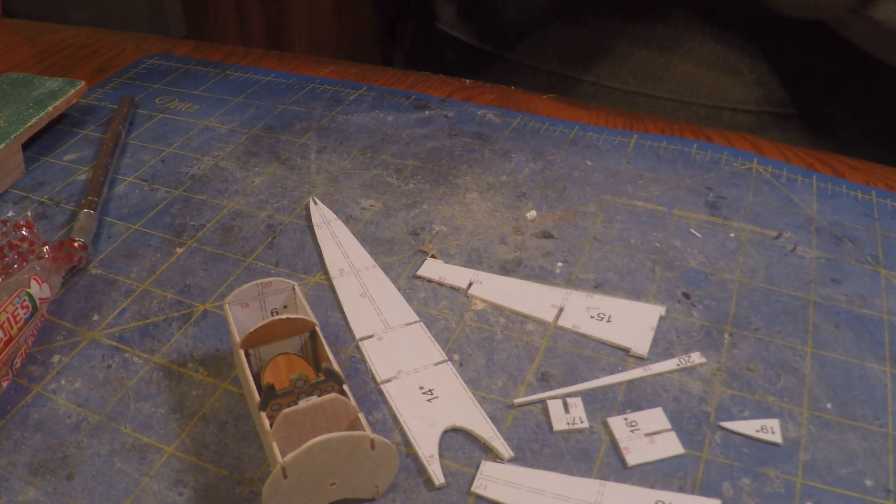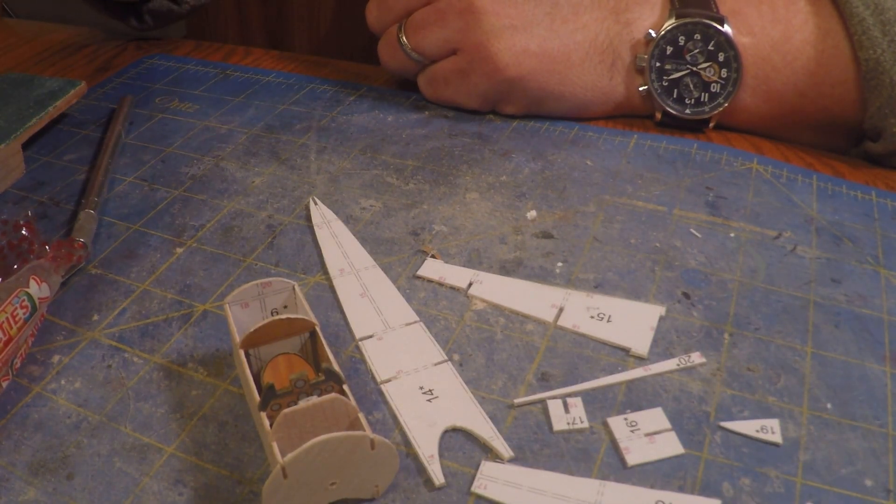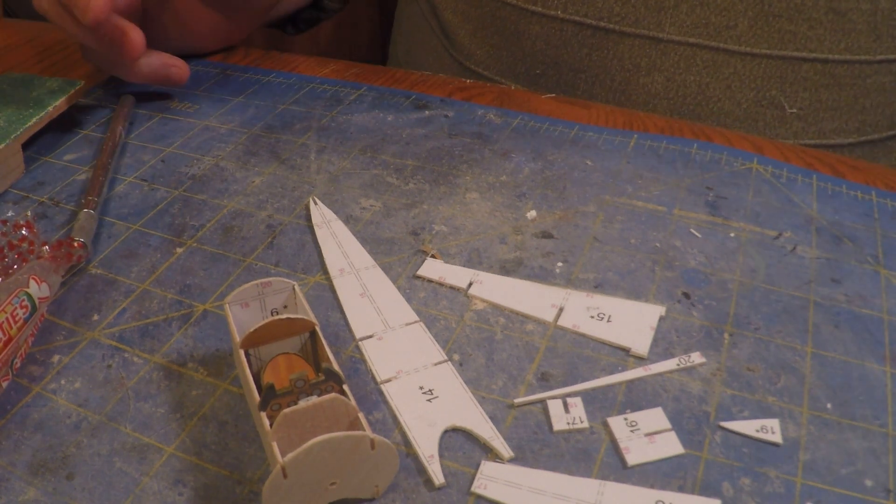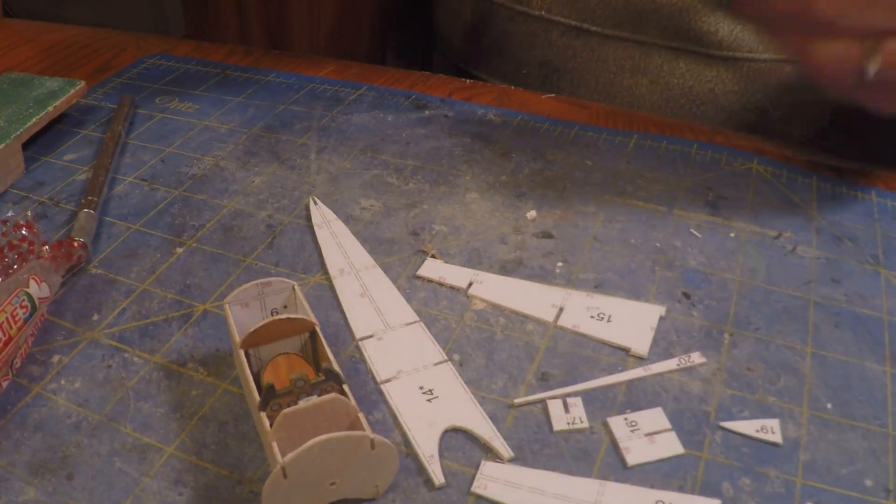Alright, so I cut out the parts for the rear fuselage and the floor, and have already sanded them down to the right thickness and all the rest of that.